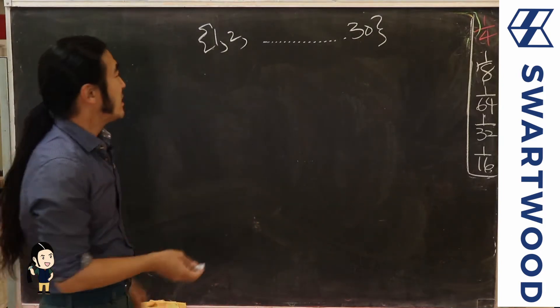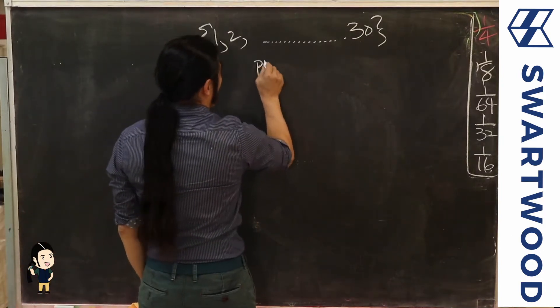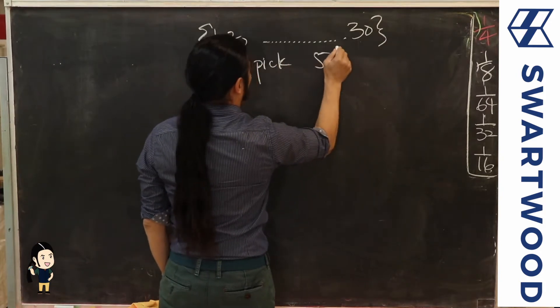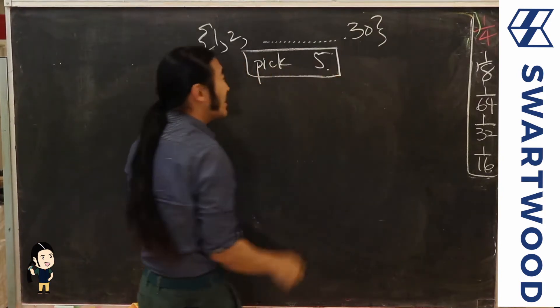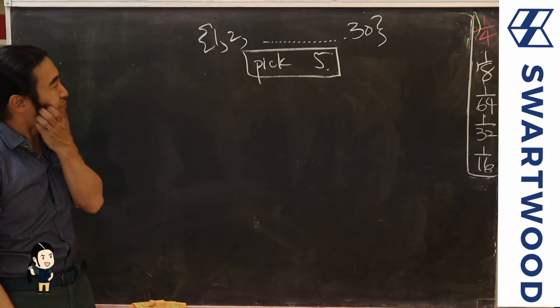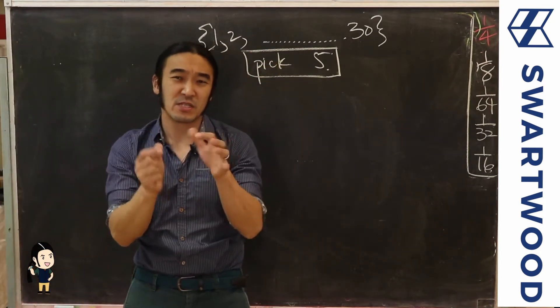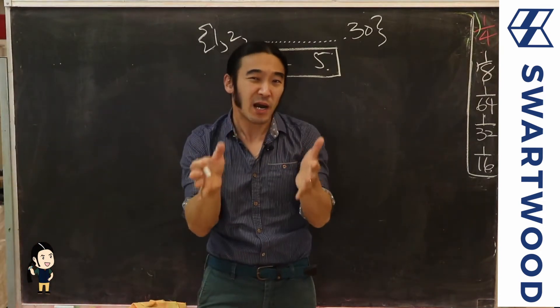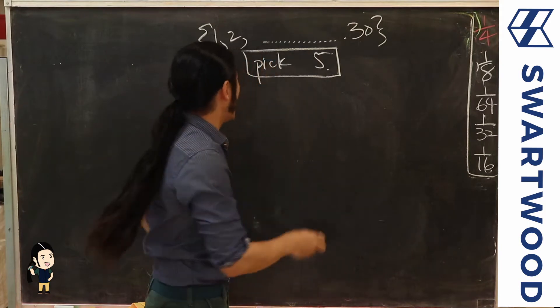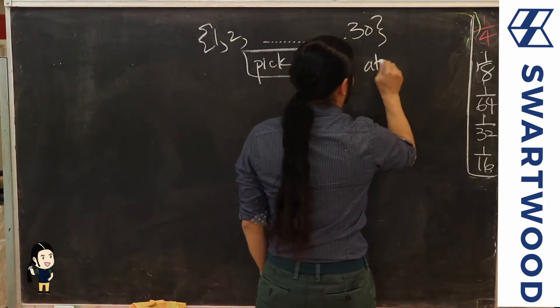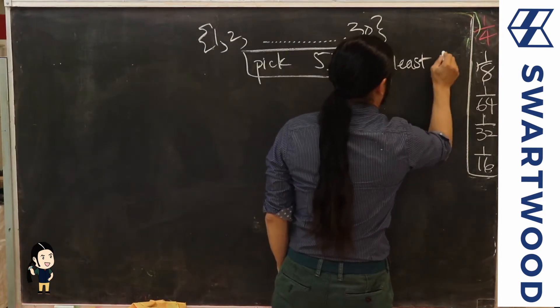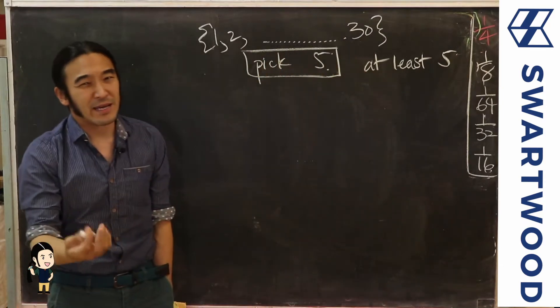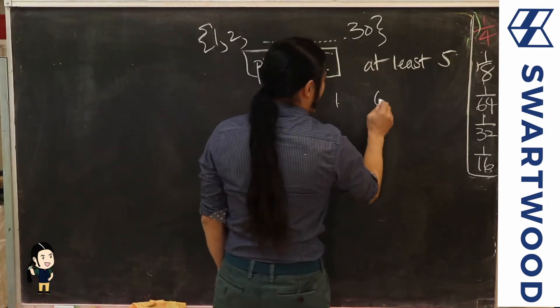What I want to do is take numbers from 1 to 30 and we want to pick five of them. Let's make sure that when we pick these five numbers, the positive difference between any two numbers is going to be at least five.